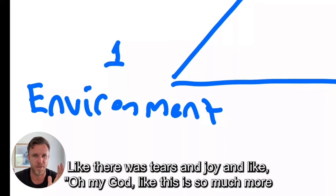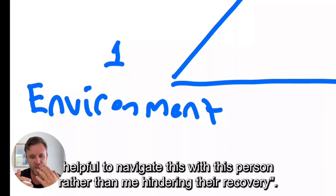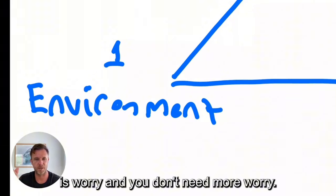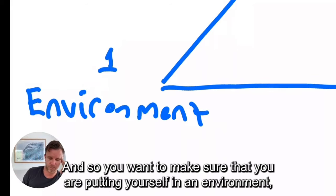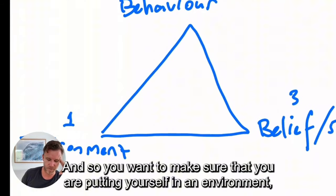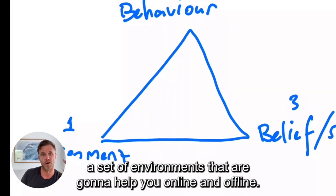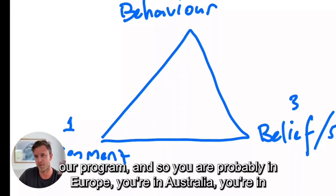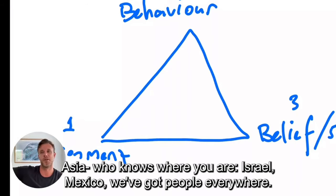And it was phenomenal. There was tears and joy and like, oh my God, this is so much more helpful to navigate this with this person rather than me hindering their recovery. And most people do give out of love, but sometimes that way of giving is worry and you don't need more worry. And so you want to make sure that you're putting yourself in an environment, a set of environments that are going to help you online and offline. They're predominantly online because we've got people in 53 countries in our program.